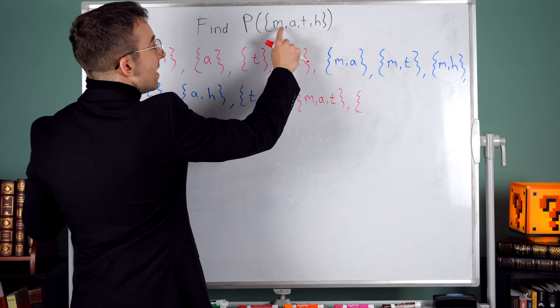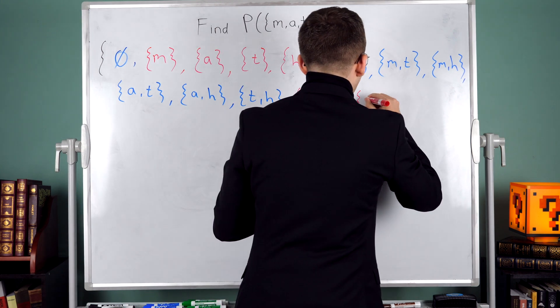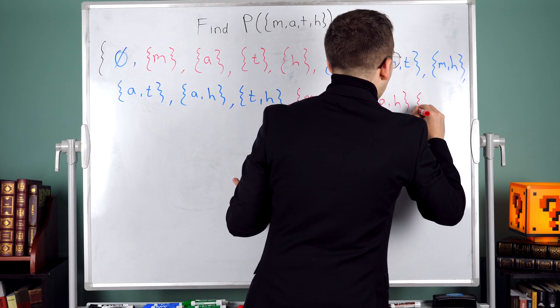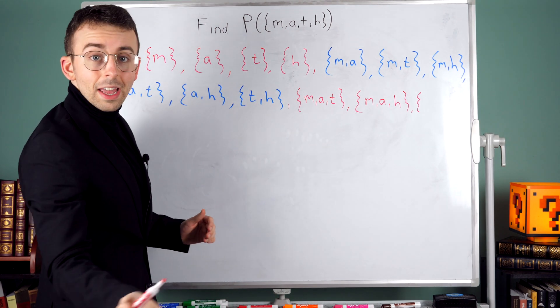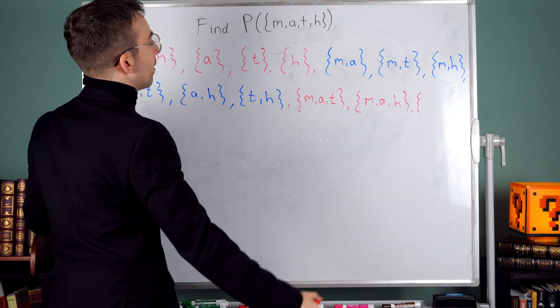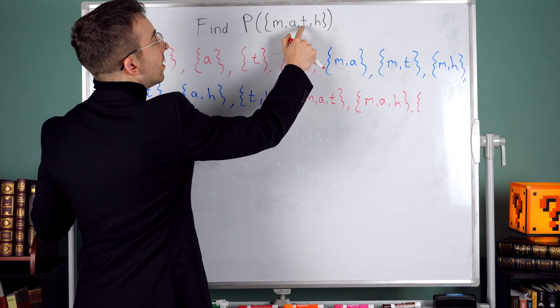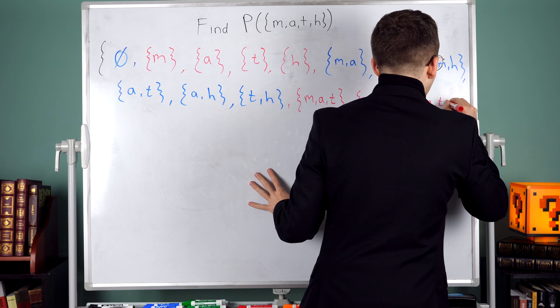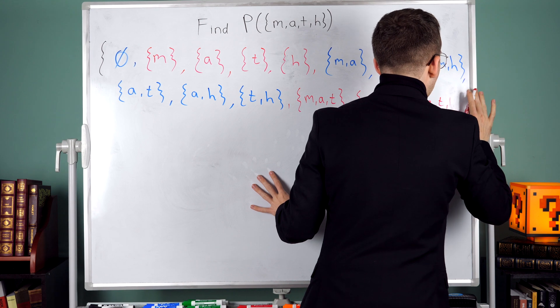So that's m, a, and t. Now let's do the one that has m, a, and h. And then what? Well, now let's do the one that has, say, m, t, and h.